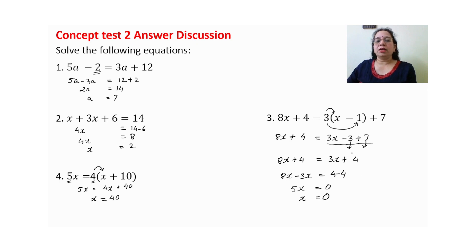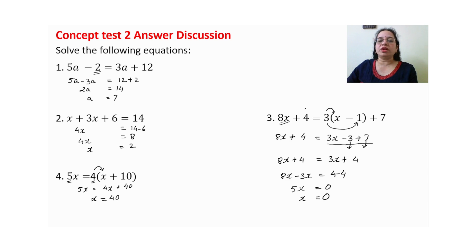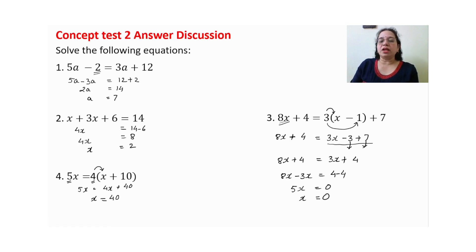I think मैंने कुछ गलत किया — क्योंकि answer तो 0 नहीं हो सकता। But यदि आप x की value 0 रखते हैं, तो variable terms 0 हो जाएंगी, and minus 3 plus 7 will give you 4 on both sides — left hand side and right hand side equal हैं। सही answer आ रहा है। यदि कभी doubt हो, तो value substitute करके verify करिए।